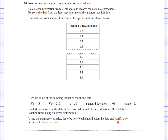The question asks: using the summary statistics, describe how Noah should clean the data and justify why. I can't see any formatting problems, so the issue is likely outliers. The interquartile range is not given, so I won't use upper quartile plus 1.5 times IQR. However, standard deviation is given and I can find the mean by dividing the sum (88) by 50. I should identify any outliers and say they should be removed — that is the cleaning.